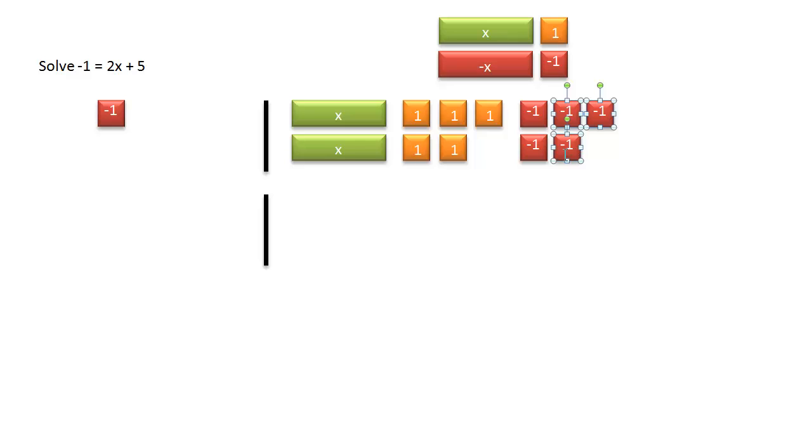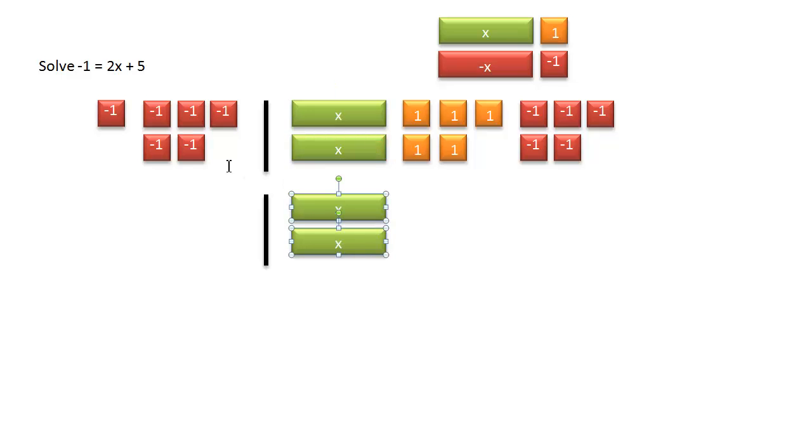So I will hold my shift key down to grab all five of them, and then hold my control key down to make a copy of them all. So these zero pairs are going to go away nicely. And I will end up with two of the x tiles on the right hand side and a total of 1, 2, 3, 4, 5, 6, of the other tiles.